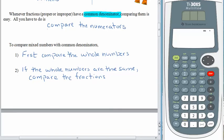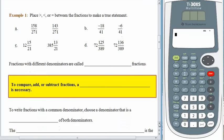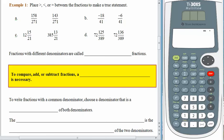Let's try this. Our job is to put greater than, less than, or equals between the fractions to create a true statement. If we looked at letter A, we would be comparing 158 two-hundred-seventy-firsts to 143 two-hundred-seventy-firsts, and we want to know which one is larger. The pieces are called 271sts. The first group has 158 pieces, and the second group has 143 pieces. So just by comparing the numerators, we know that 158 two-hundred-seventy-firsts is the larger fraction. Your job is to do the next three — pause the recording, give it a shot, and come back when you are done.